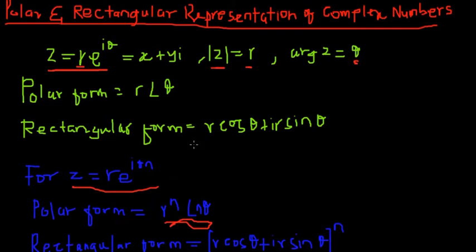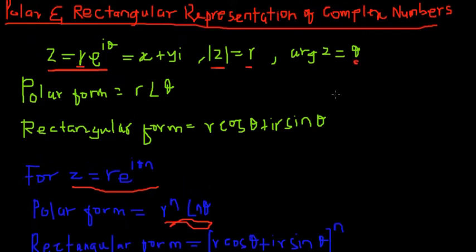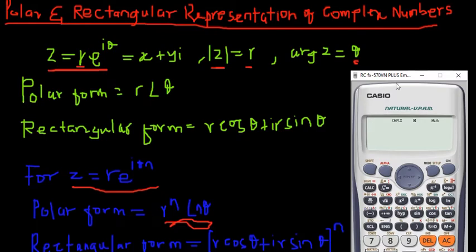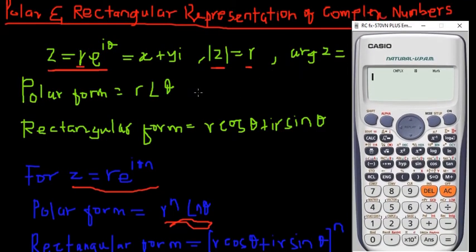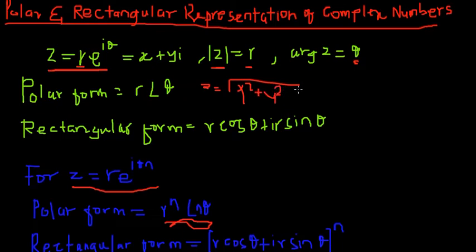We've already gone through how to find the modulus and argument in the previous video. If you haven't watched it, kindly do so. So let's go right into converting complex numbers into their polar form. From the previous video you'll remember we use the formula: the modulus |z| equals the square root of x squared plus y squared, and for the argument we use tan inverse of y over x.